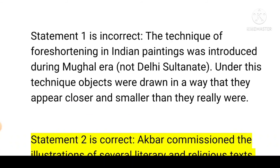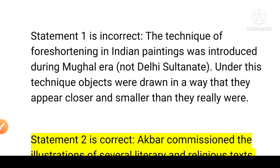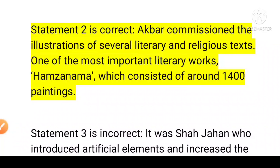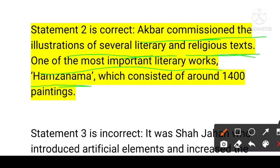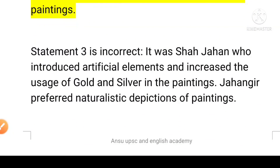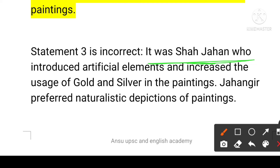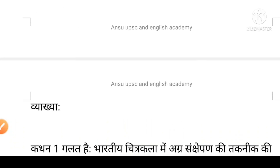Statement one is incorrect: the technique of foreshortening in India was introduced during the Mughal era, not the Delhi Sultanate period. Under this technique, objects were drawn in a way that they appear closer and smaller than they really are. Statement two is correct: the Hamza Nama paintings were commissioned by Akbar. Statement three is incorrect: it was Shah Jahan who introduced artificial elements and increased the use of gold and silver in paintings. Jahangir preferred naturalistic depiction in painting.